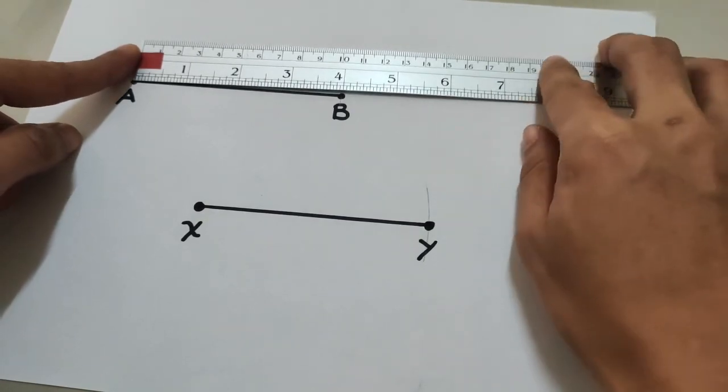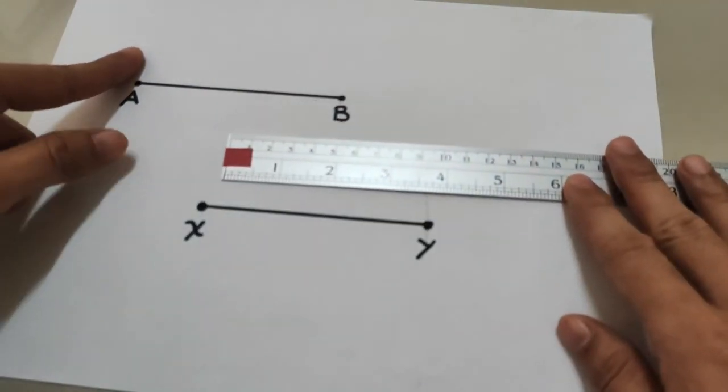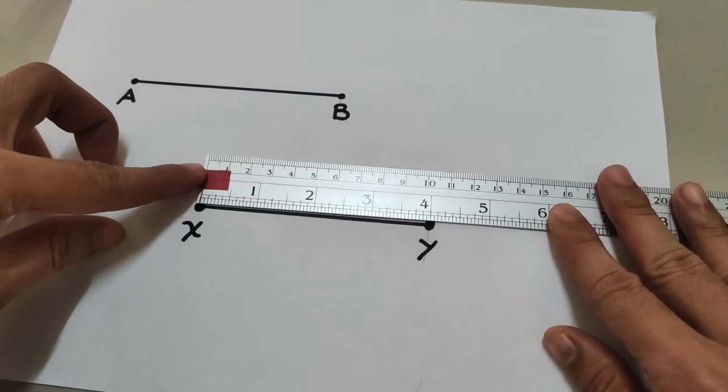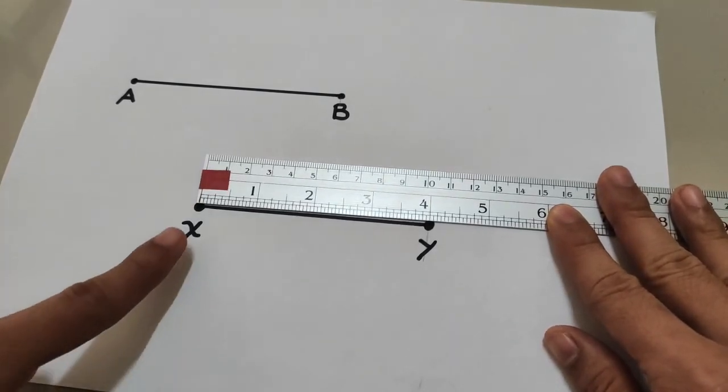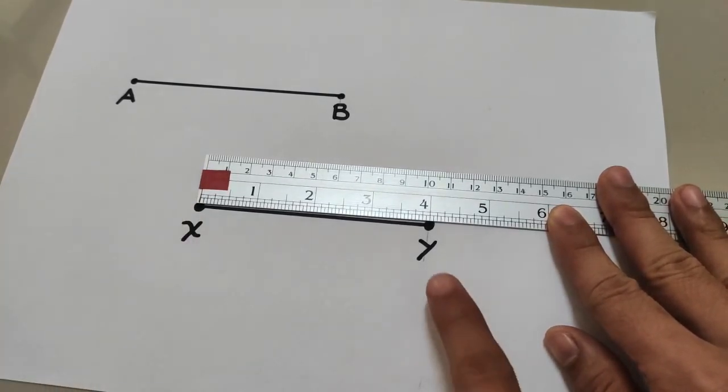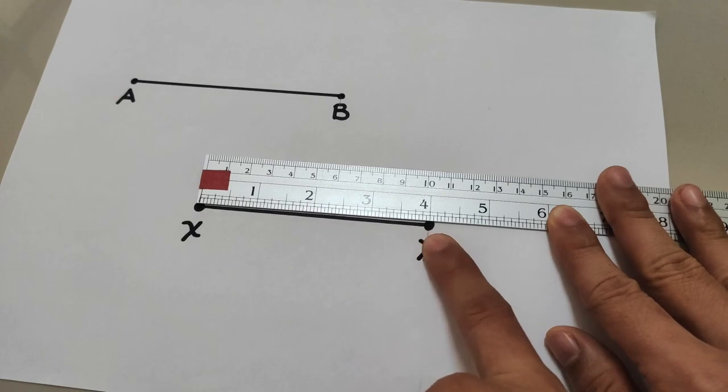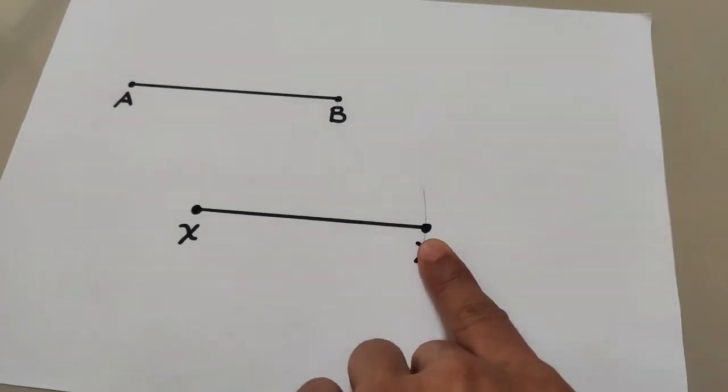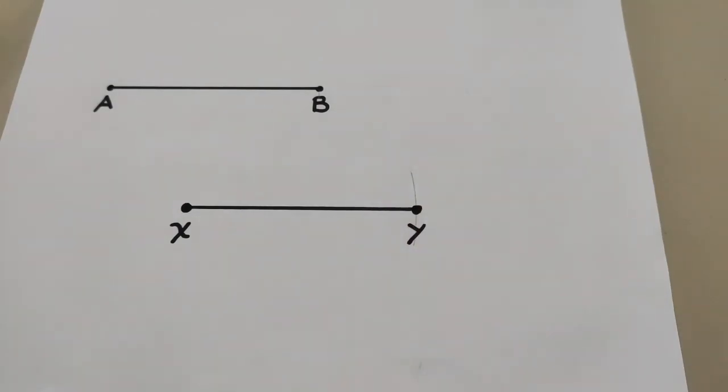And if we move the ruler to measure segment XY, you can see that segment XY is also 4 inches. And that's all for constructing congruent segments. Thank you.